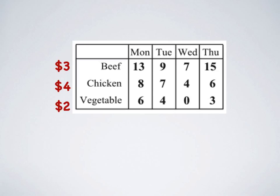Let's take a simple example. A restaurant sells pot pies: beef, chicken, and vegetable at $3, $4, and $2 per unit respectively. And this table gives you the unit sales day wise and item wise. So how do we find the total sales on Monday, Tuesday, Wednesday, and Thursday?